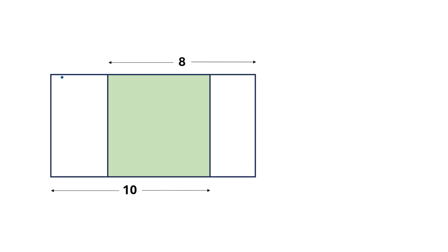Consider the side length of this square is x. So this length will be x, this will also be x, this green side is also x, and this is also x. Since this point to this point is 8 units and this length is x, the rest of this length will be 8 minus x units. Similarly, this length equals this length, so this will also be 8 minus x units.